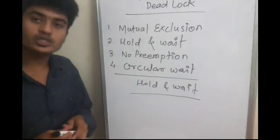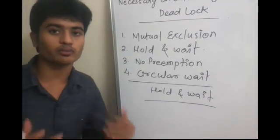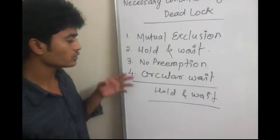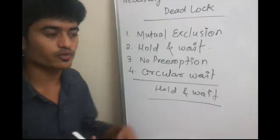Then what is no preemption? A process cannot be preempted. Resources cannot be preempted from the process before its completion. That is known as no preemption. We can't take out the resources from the process which is running or stopped.